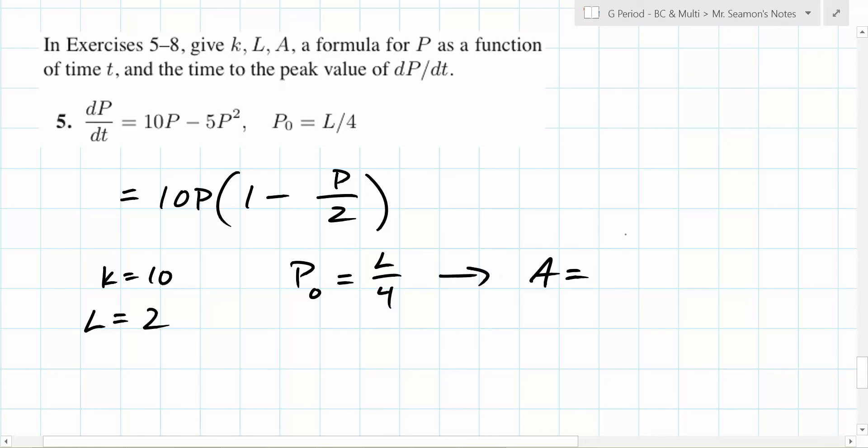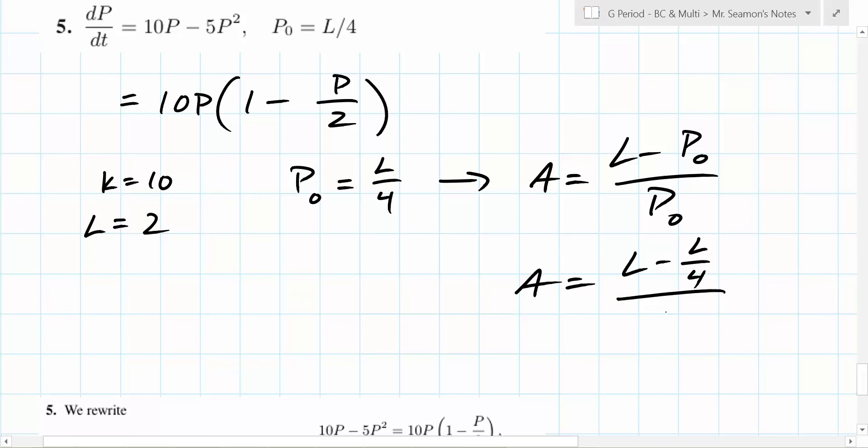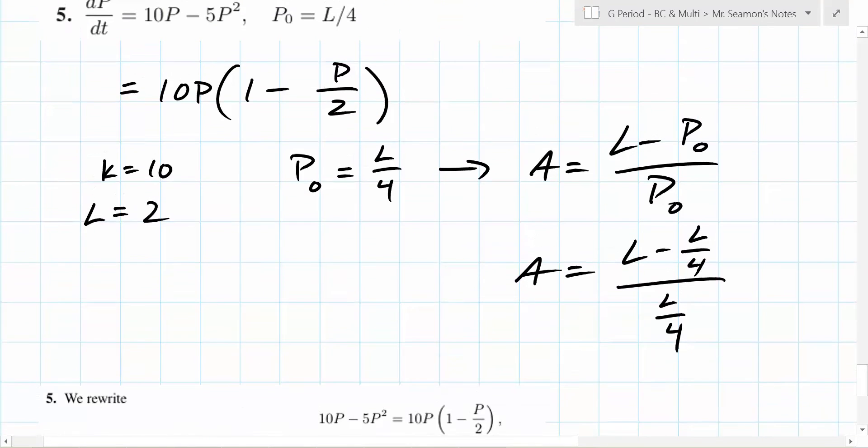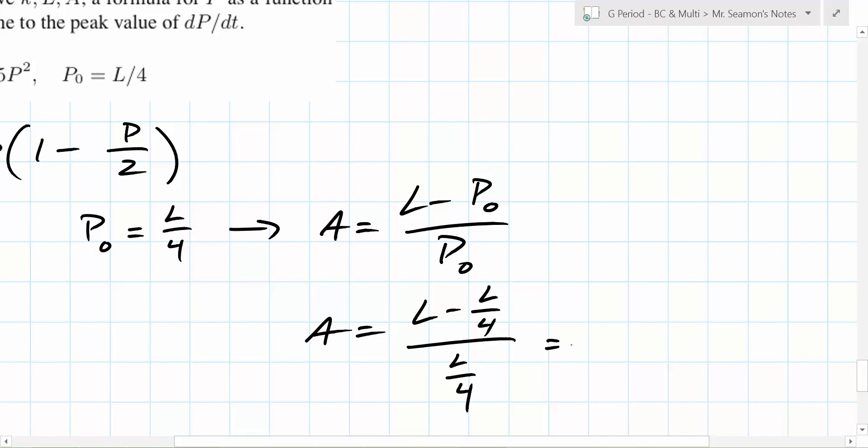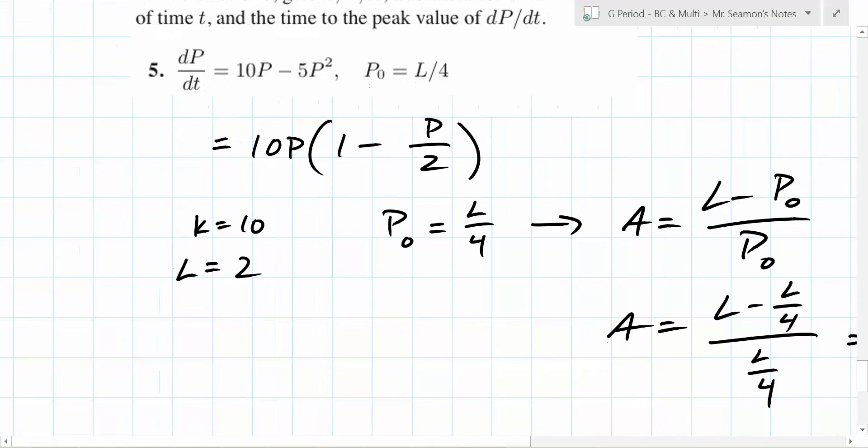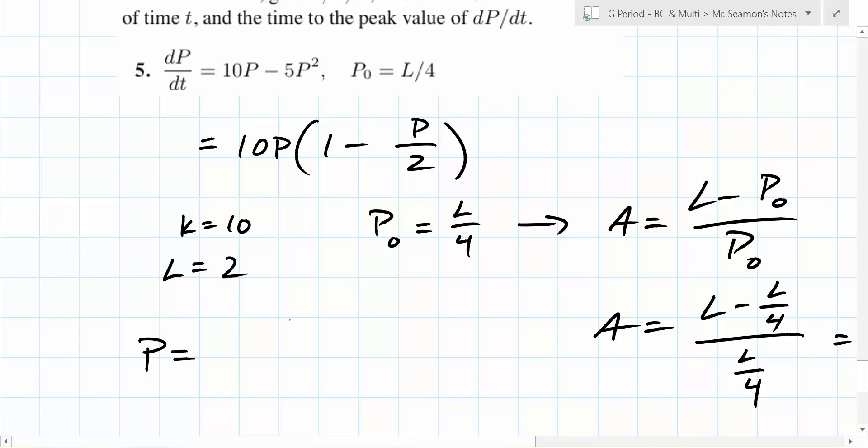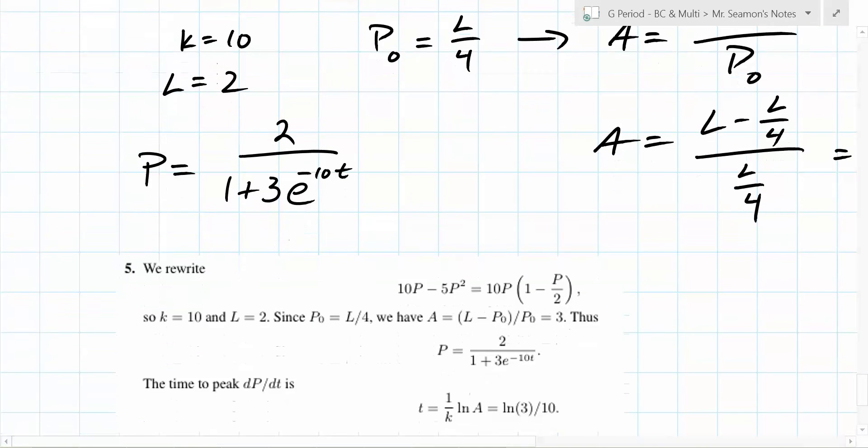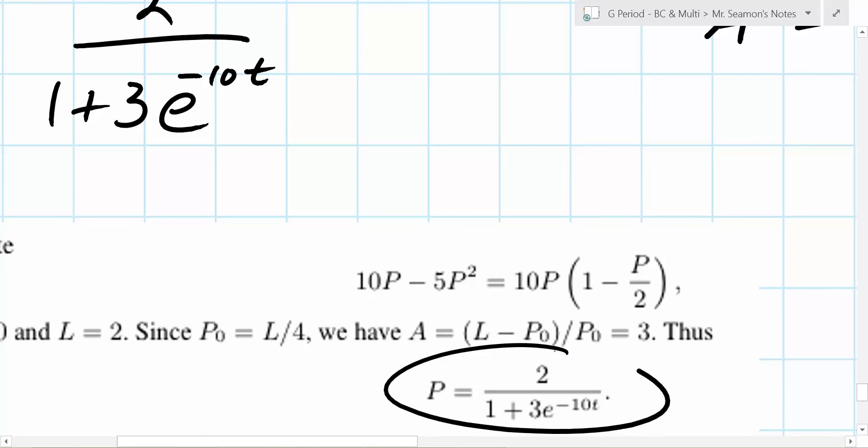So that tells us A is what? L minus P0 over P0. So what is A going to be equal to? L over 4 over - yeah, you're doing the fractions out? So what do we have here? 3. Is it 3? Yeah, because it's like 1 minus a quarter over a quarter. So it's 3 quarters on top and 1 quarter on the bottom. So it's 3. Oh, A is 3. So what does that tell us P is equal to? L over - so 2 over 1 plus A is 3, e to the negative 10t. Exactly. Hey, how did we do? How does that look? Yay, we did it.